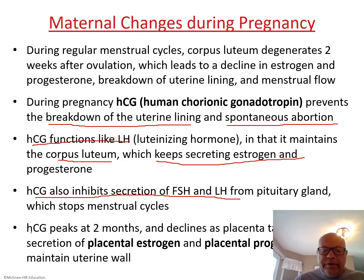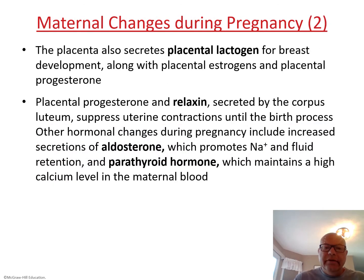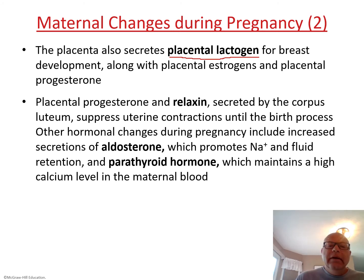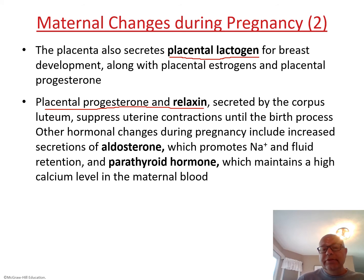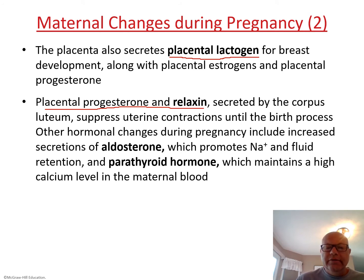HCG peaks at two months, then the placenta takes over. The placenta also secretes a hormone called placental lactogen for breast development. Placental progesterone and relaxin, which was secreted by the corpus luteum, suppress uterine contractions until the birth process.